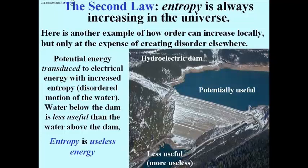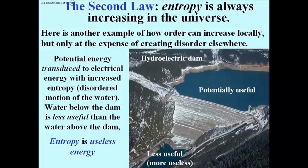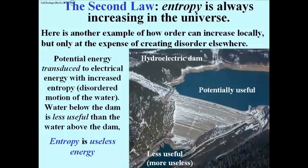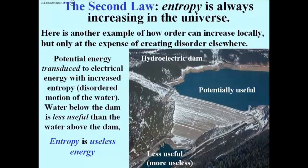The water at the bottom of the dam, I think we would all agree, is less potentially useful than the water above the dam. Another way to look at this is to say that the water in the stream bed below the dam is more useless. Or by comparison to the potentially useful water in the lake, the water that has already flowed through the dam is now useless. So entropy then can be seen as useless energy. Energy that can't be used to do anything productive, unlike the water in the lake.